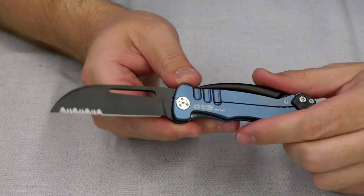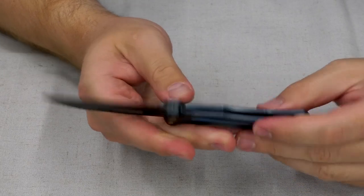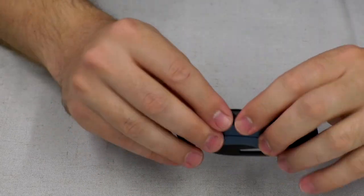It is DLC coated, diamond-like coating, as well as the Marlin spike. This second tool here is the Marlin spike.